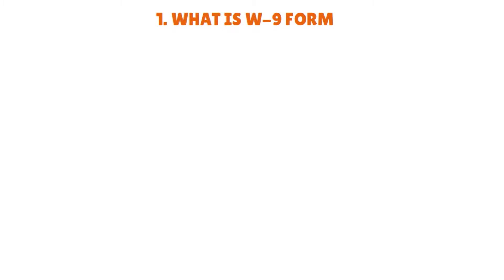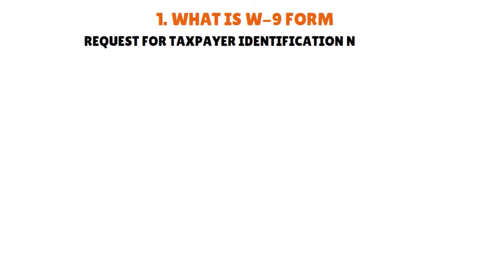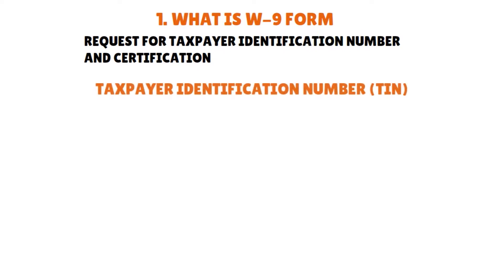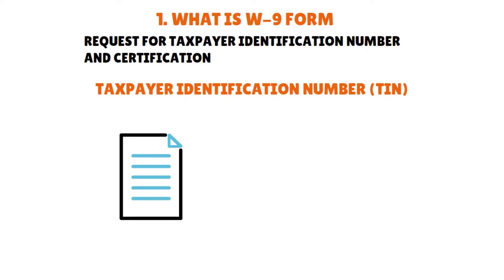So what is it? The official title of Form W-9 is 'Request for Taxpayer Identification Number and Certification.' Employers use this form to get the TIN — the Taxpayer Identification Number — from contractors, freelancers, and vendors. The W-9 also provides other personally identifying information like your name and address.